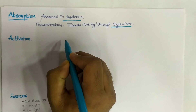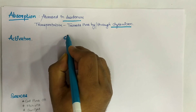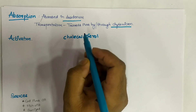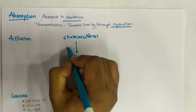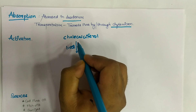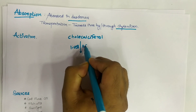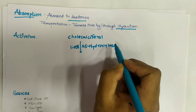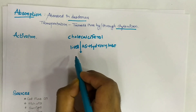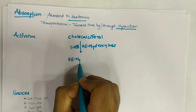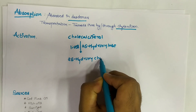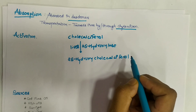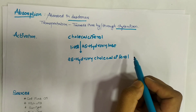Here is cholecalciferol — vitamin D3 — the naturally obtained form. It goes into the liver, where the enzyme 25-hydroxylase converts it into 25-hydroxycholecalciferol. This intermediate form then travels toward the kidney.